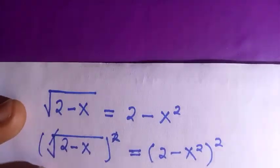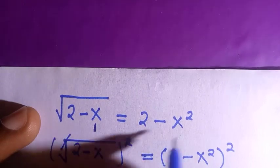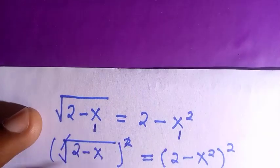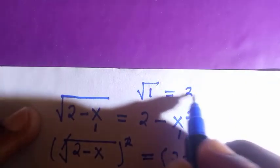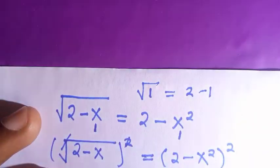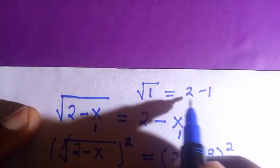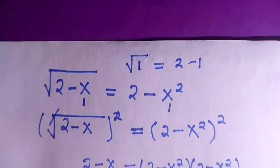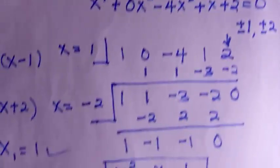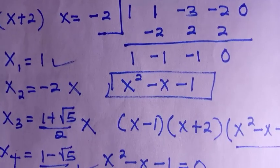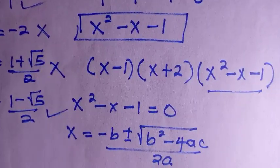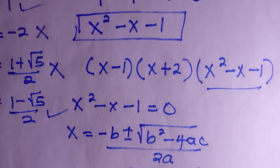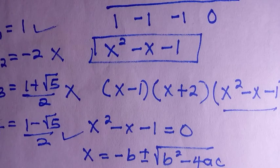Let's verify: at x equals 1, we have 2 minus 1 on the left-hand side, which equals the right-hand side. You can also test x equals (1 minus root 5)/2. Thanks for watching — don't forget the steps used, subscribe to this channel, like this video, and never stop learning.